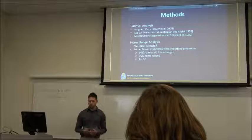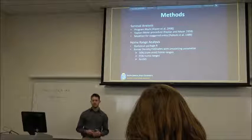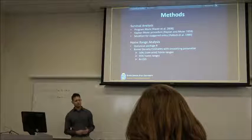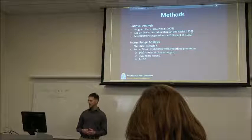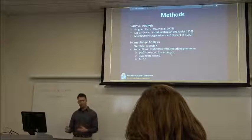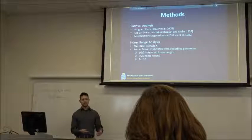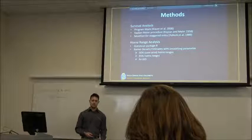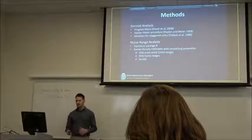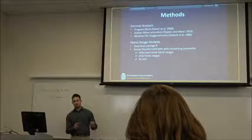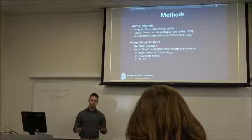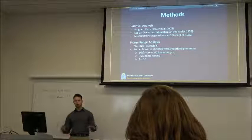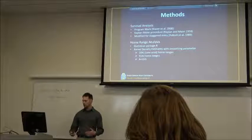So we're going to use a Kaplan-Meier procedure with known fate and modified for staggered entry in order to determine seasonal and annual survival rates for adults, yearlings and fawns and we will break our seasonal survival into three time categories of a pre-hunt, a hunt, and a post-hunt time interval. For our home range analysis we're going to calculate kernel density estimates or KDEs with a smoothing parameter and statistical package R in order to calculate 50 percent and 95 percent home range sizes.